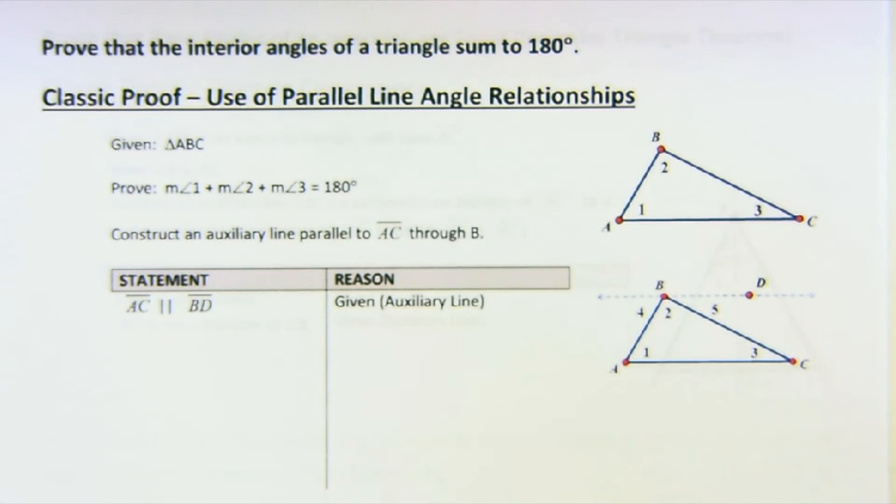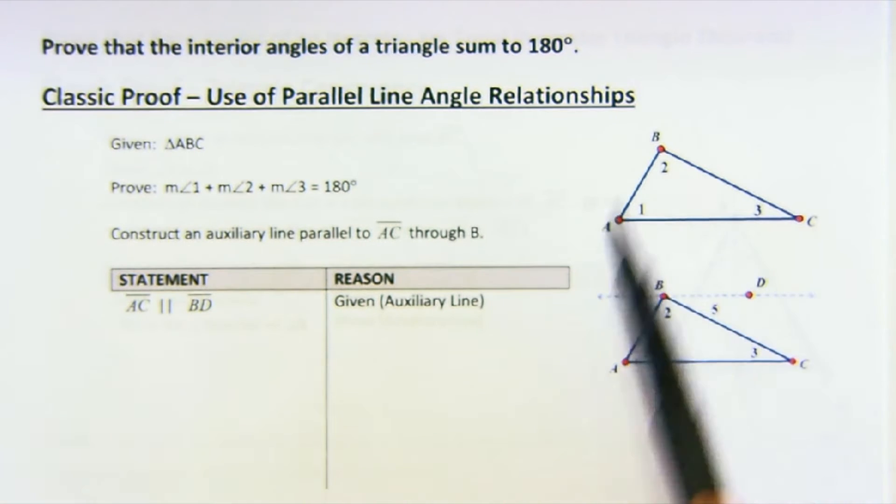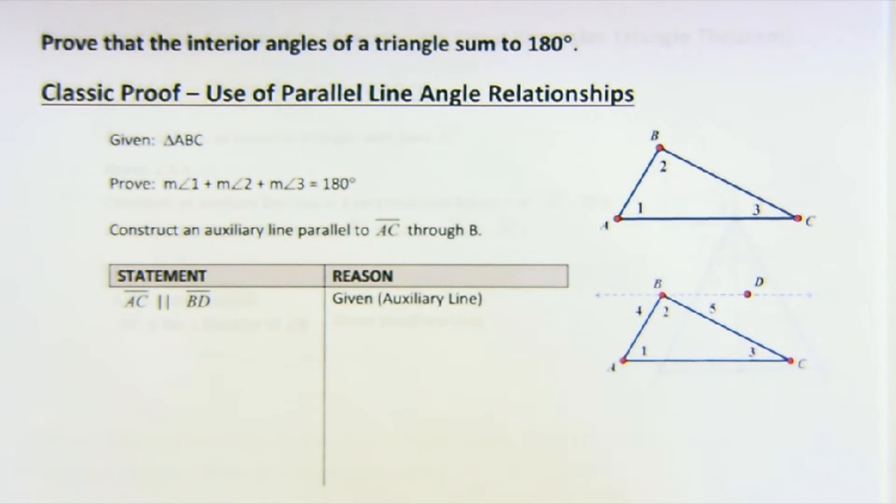Let me just go through what I would call the classic proof that the three angles of the triangle add up to 180. So given just any old generic triangle, I want to prove that 1, 2, and 3, or A, B, and C, all add up to 180. The trick to doing this classic proof is this auxiliary line or an extra line that you create so that it's parallel to AC, one of the sides.